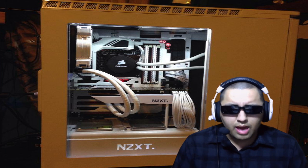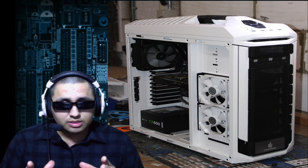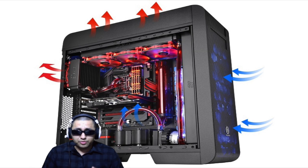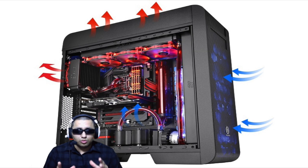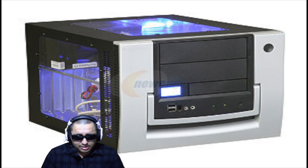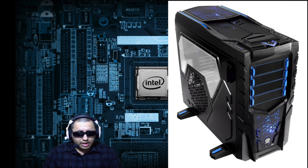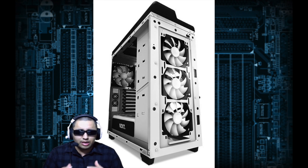Step number one: select your PC case. Make sure it's ATX so you can fit an ATX motherboard. Make sure it's optimized for great airflow — you don't want things overheating inside. There are different types of cases: micro ATX, full-size ATX, and mid-tower ATX, which is what I have.